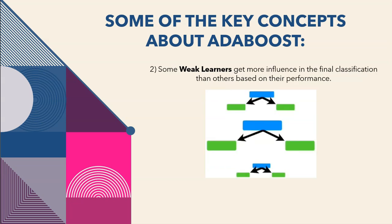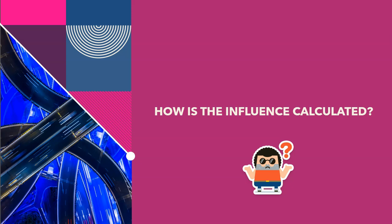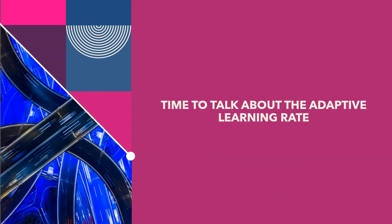Some weak learners get more influence in the final classification than others based on their performance. But you may wonder how the amount of influence for each weak learner is calculated. That is where the adaptive learning rate comes into play.